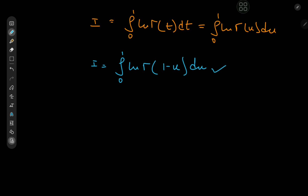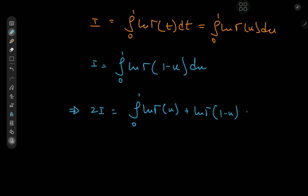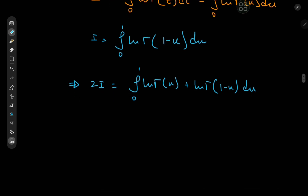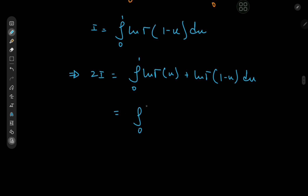We know we have one form for I and also this equivalent form for I, so we can add them up. By that token, we have 2I = ∫₀¹ [log·Γ(u) + log·Γ(1 − u)] du. Of course, adding logarithms results in a logarithm of the product, so this becomes 2I = ∫₀¹ log[Γ(u) · Γ(1 − u)] du.